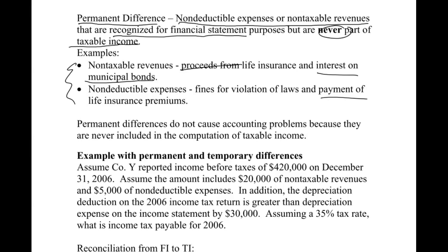On the expense side, another example is fines. If I get an EPA violation for polluting a river, that's a fine that's going to be an expense to my company and will lower my net income. However, the IRS is not going to let me take a deduction and pay lower taxes because I'm violating the law, so I won't be able to deduct that.